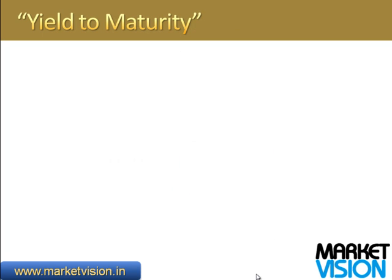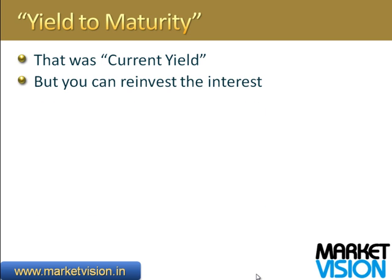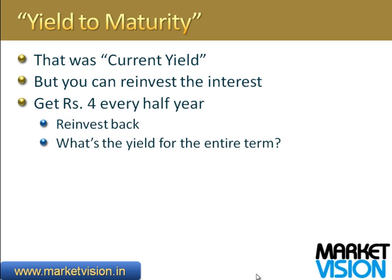But this is very simplistic — this is called current yield. You can reinvest the interest that you receive. You get 4 rupees back every 6 months, which can be reinvested back into the bond. And if you've paid 90 rupees for a bond with a 100 rupee face value, that means at the end of 10 years you'll get 100 rupees back — this is a small capital gain. If you paid 110 rupees for the bond, then you'll get only 100 rupees back after 10 years — this is a small capital loss to take into account.